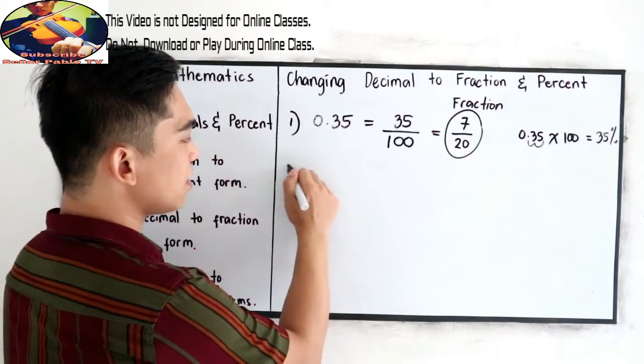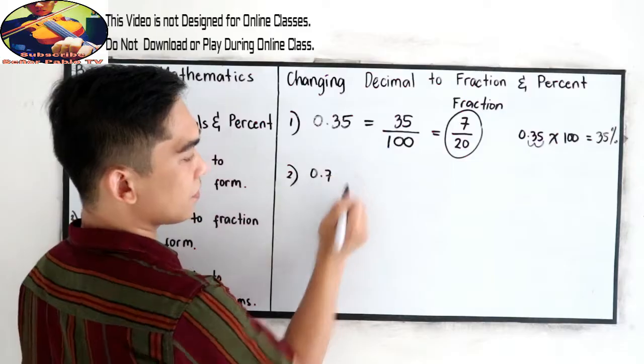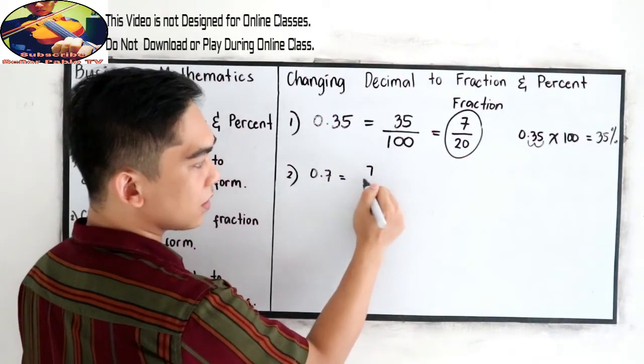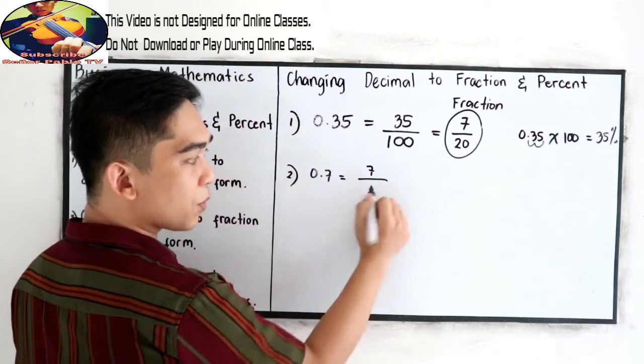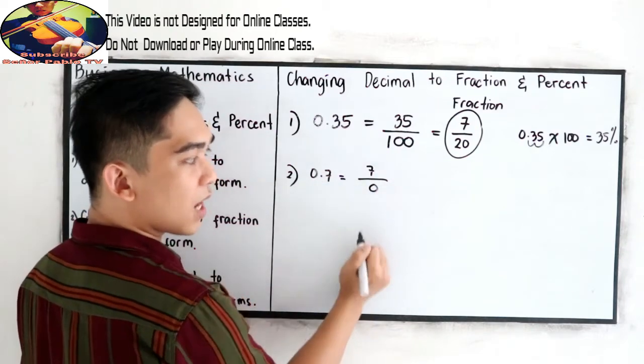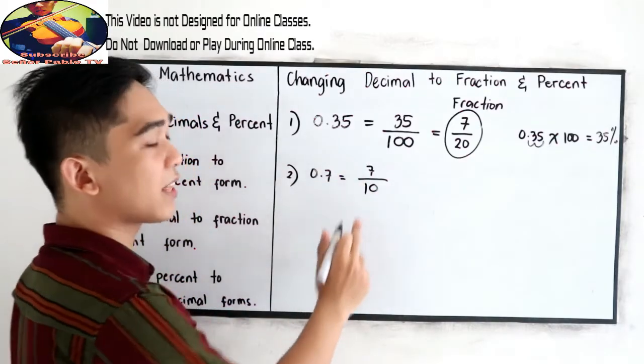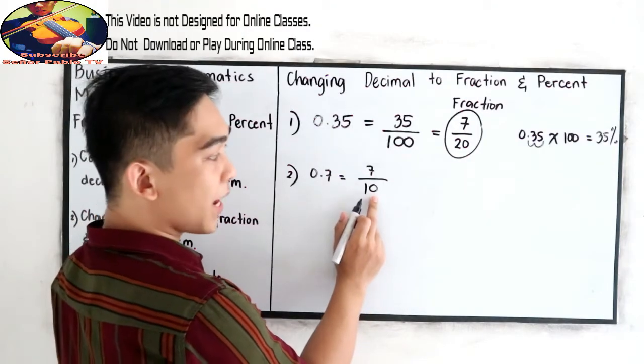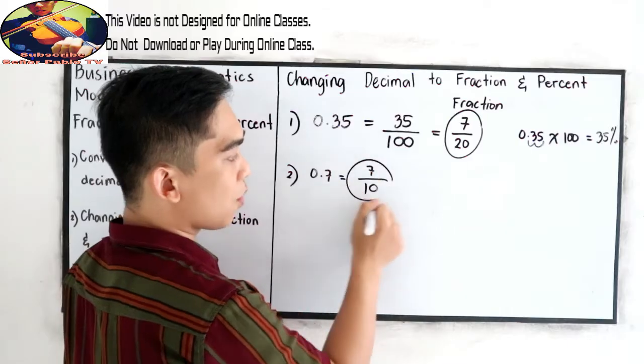So same case, if we have 0.7, so copy, 7 over, we have one decimal point, so we have one zero in our denominator, then write 1, 7 over 10, or 7 tenths. Can we simplify? No.